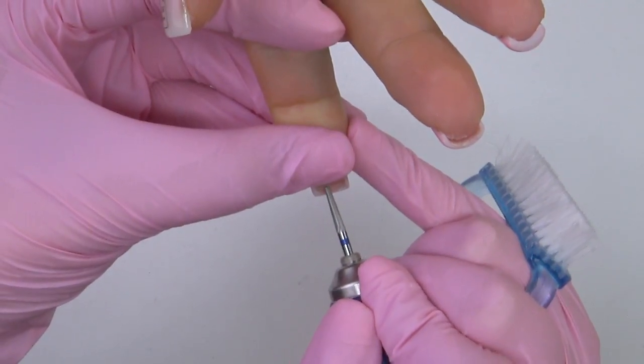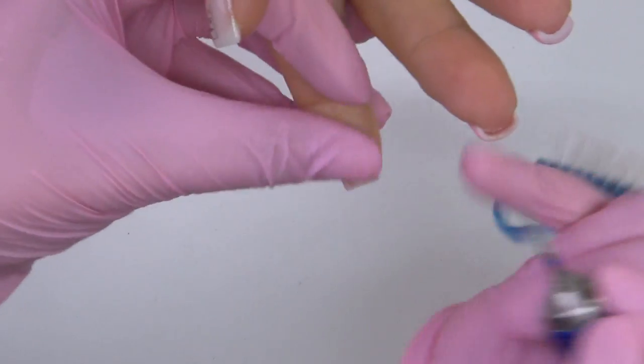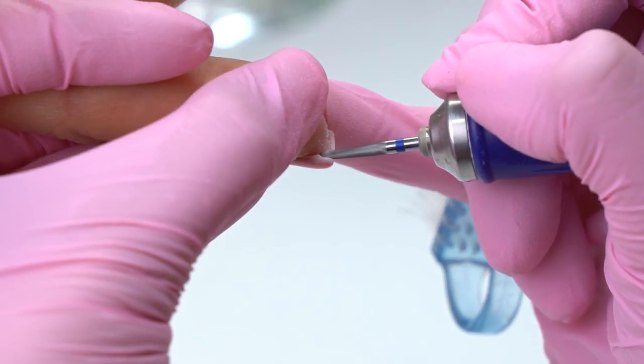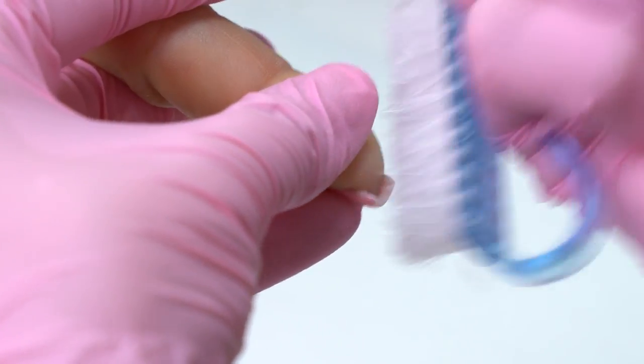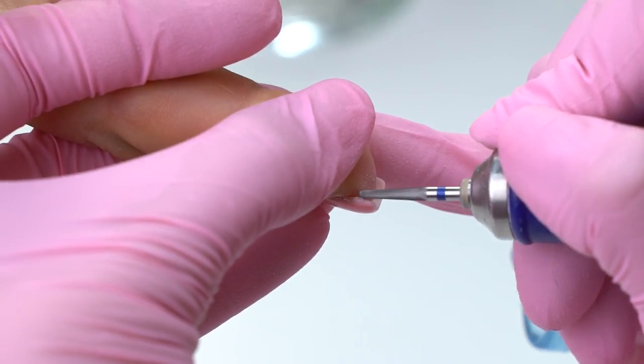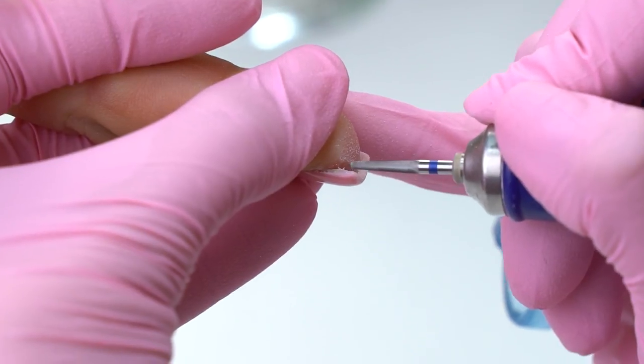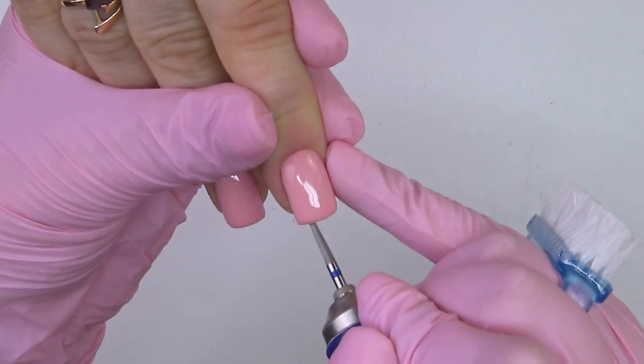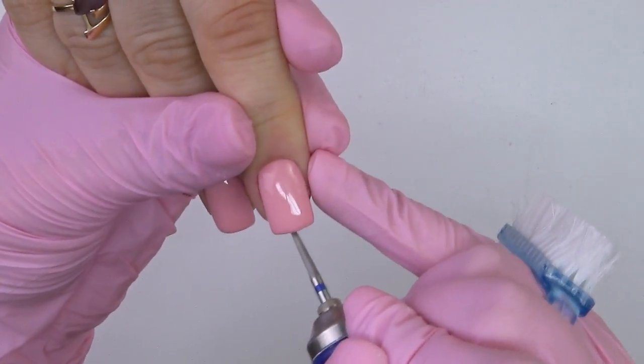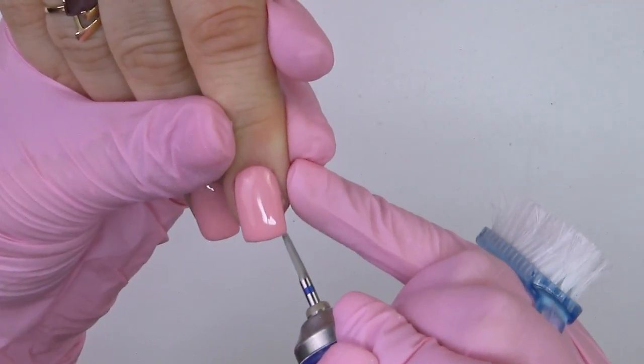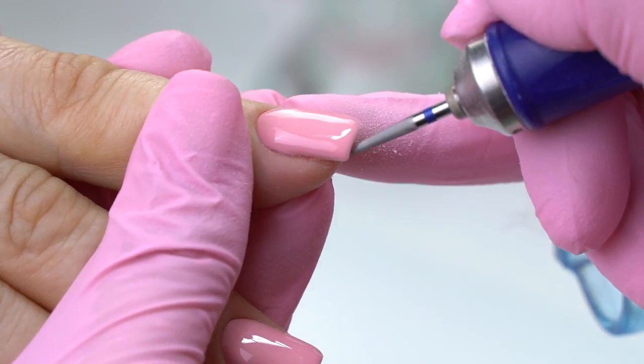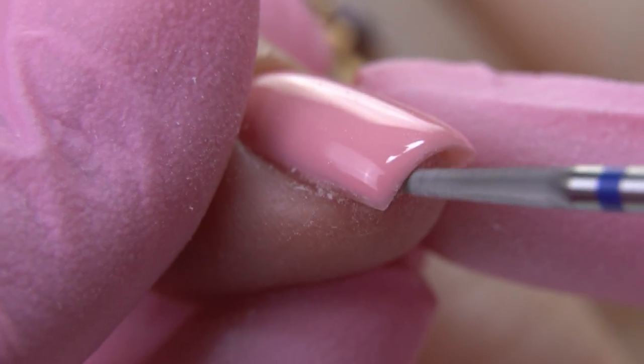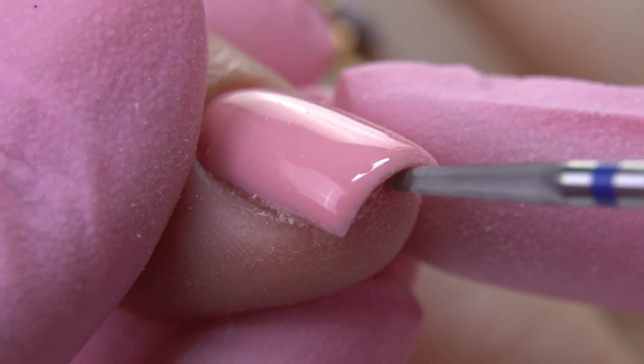And here comes that very secret, proving 100% wearability. We need to drill out the natural nail from the inside. Since no nail, no problems, no liftings. I'm using a thin blue carbide drill bit. First I turn the hand over and drill it out in the forward position, moving from right to left. Then I turn it back and smooth out the arch moving from left to right. I check if it's all even.